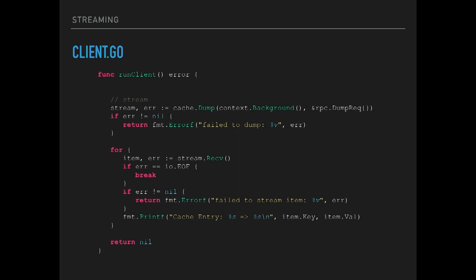On the client side, instead of getting a response object back from cache.Dump, you get a stream object. You set up a for loop calling receive for as long as it doesn't return EOF, which streams all messages and prints them to the console. One important caveat about streaming: timeouts are a giant pain. When you pass a timeout into a streaming request it applies to the whole stream, so if you want timeout-until-first-value or between-message timeouts, you have to implement all of that on your own. There's really no native support for it, which is annoying.